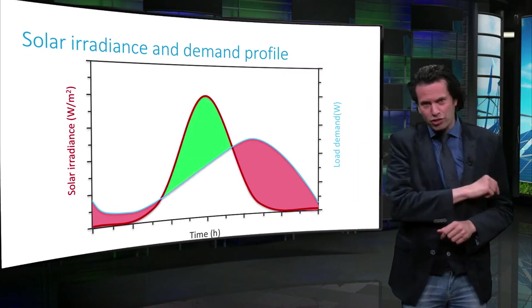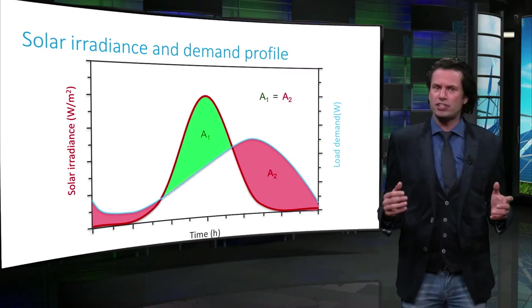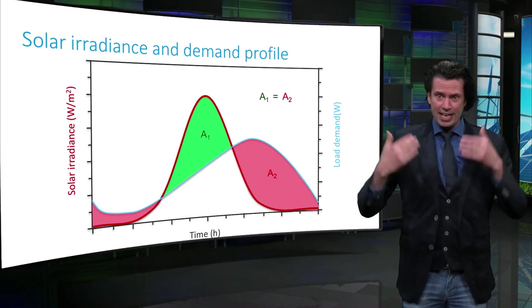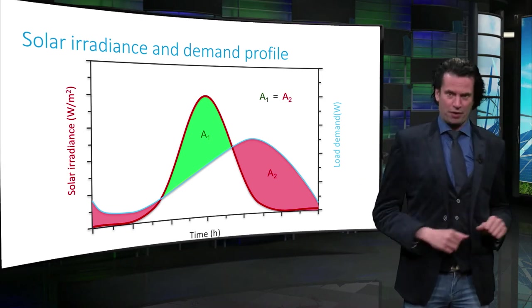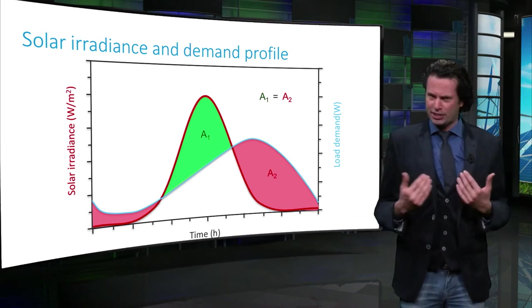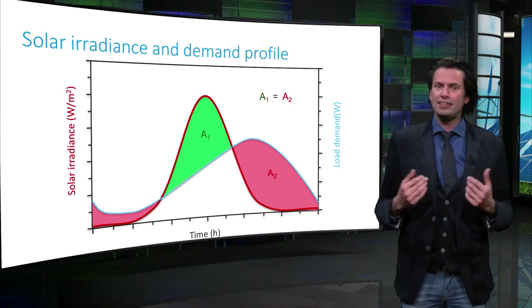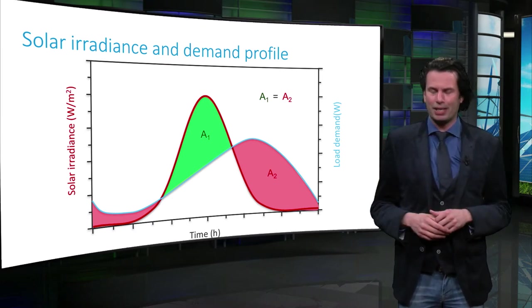With the introduction of the battery storage in the PV system, the excess energy from the sun during the day can be stored in the battery. The battery can then be discharged during periods of low solar irradiance, and thus the load demand can be met.